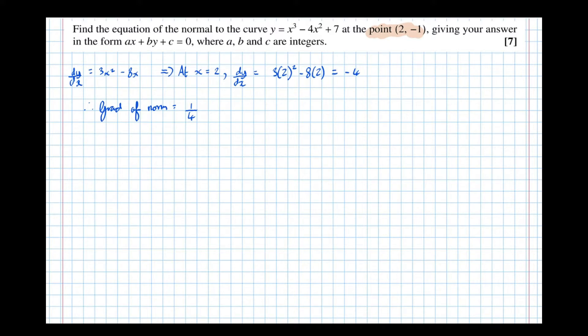So we've got everything we need now to be able to give the equation of the normal. So we've got y minus the y coordinate, which is -1, equals the gradient, 1/4, times x minus the x coordinate, which is 2.